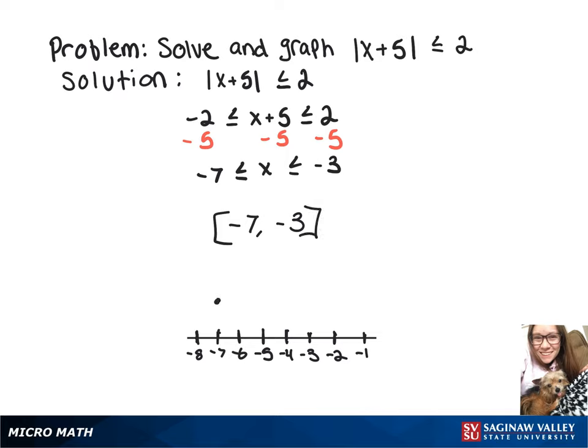So we're going to have a closed circle on negative 7 and on negative 3, and then a line connecting the two.